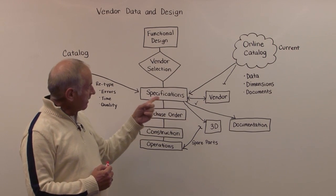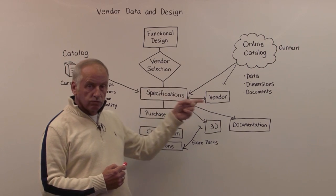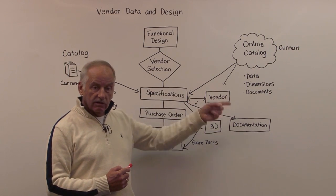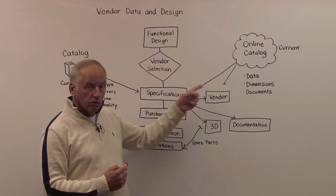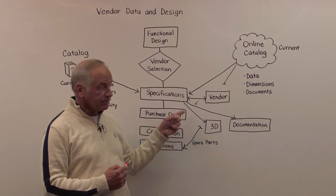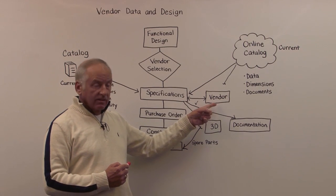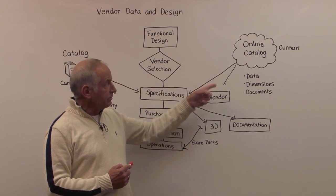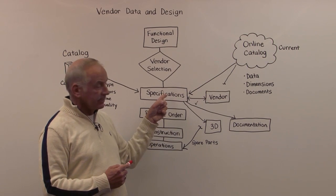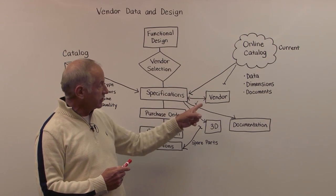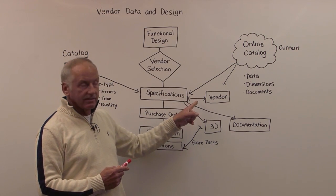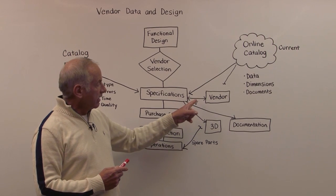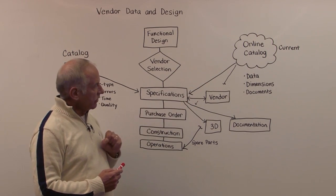Another great advantage is when we go to vendors for double-checking. Sometimes vendors are in the loop to verify the specification. The vendor doesn't have to spend too much time because the data he controls himself is already in the specification. So this checking process is greatly reduced by using the online catalog.